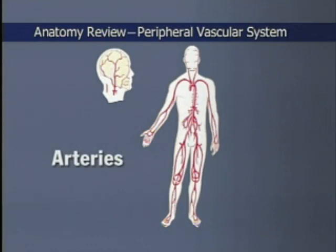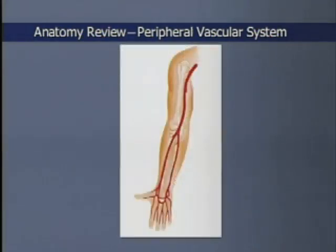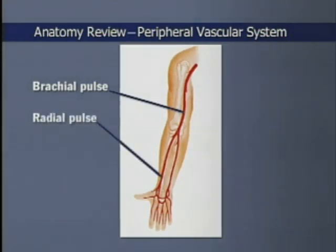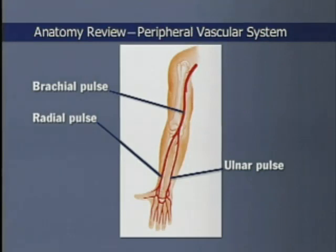When arteries lie close to the body surface, you can feel their pulsation. In the arms, arterial pulses are palpable in three locations. The brachial pulse can be felt at and above the bend of the elbow, medial to the biceps tendon and the muscle. The radial pulse can be felt on the flexor surface of the wrist laterally. The ulnar pulse may be felt on the flexor surface of the wrist medially; however, overlying tissues frequently obscure this pulse.